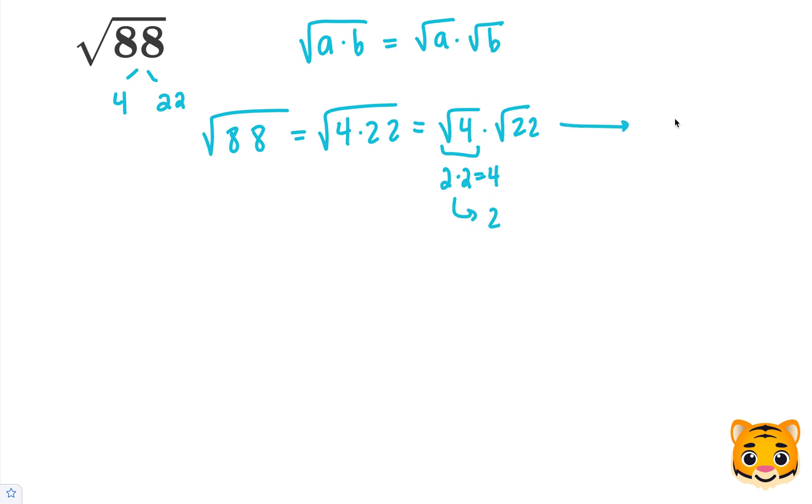So we can rewrite this whole answer as 2 times the square root of 22. This is our simplified answer.